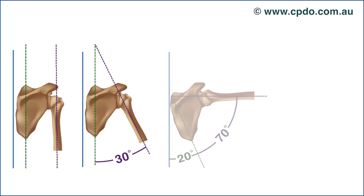As shoulder abduction continues, the inferior angle of the scapula begins to shift outwards as it undergoes superior rotation. On average, there are approximately two degrees of glenohumeral movement for every one degree of scapulothoracic movement from this point. This means that as the upper extremity moves through abduction to 90 degrees, the glenohumeral joint contributes 40 degrees for a total of 70, while the scapulothoracic joint has only contributed 20.